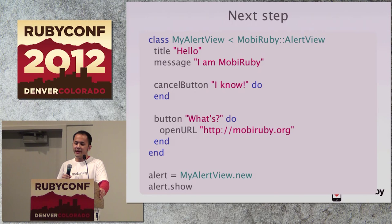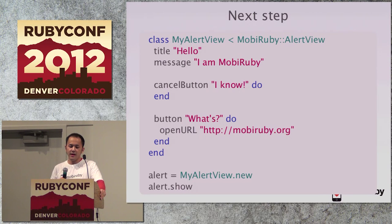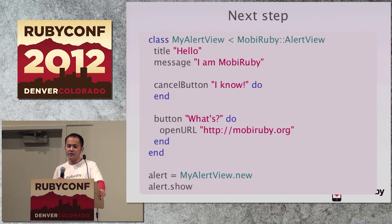I'm aiming for cleaner code in the next version — it will look like true Ruby code, not similar to Objective-C. ActiveRecord wraps SQL and provides a good DSL to Ruby programmers. Similarly, MobiRuby will wrap the Cocoa libraries and provide a good DSL to Ruby programmers. But first, I focused on making the Cocoa bridge on mRuby as the baseline. After that, I will create new APIs.